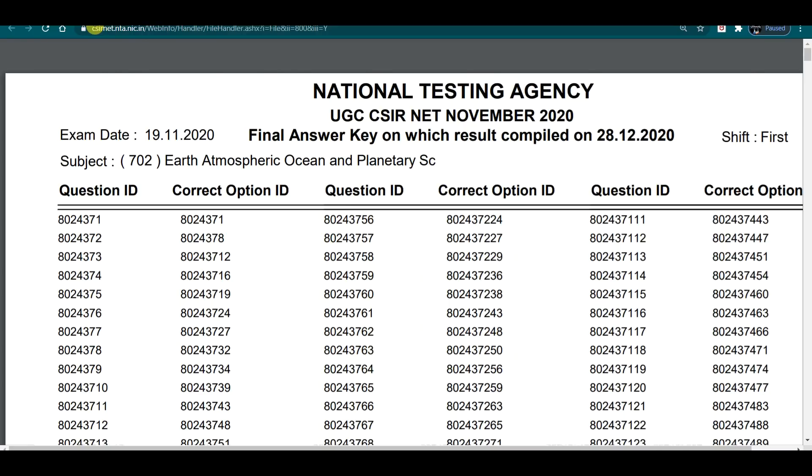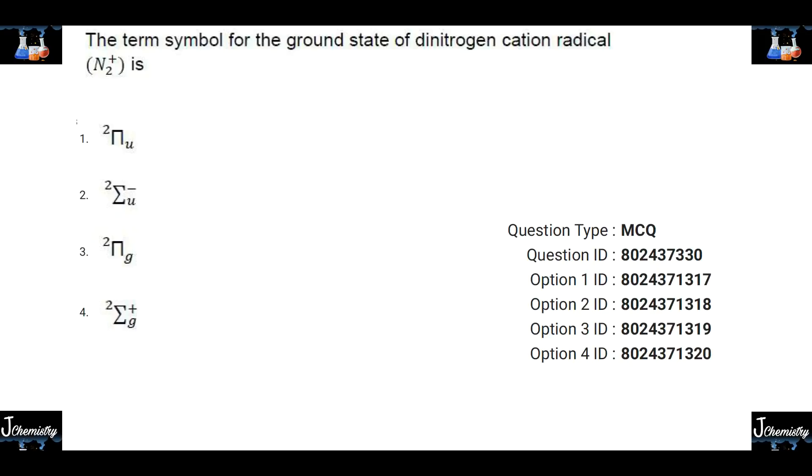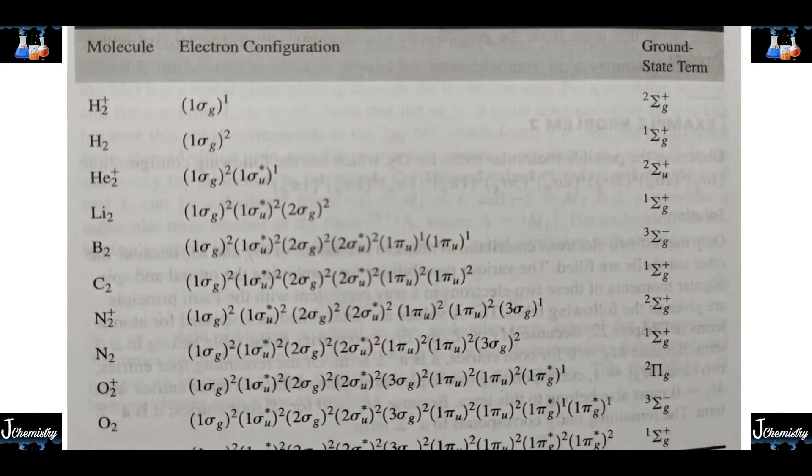I will show you which questions. So first of all, this question which I wanted to tell you the term symbol, Dyan Hydrogen Catan Radical. So first I think option A was given, but now the final answer came, option 4 has been given. So 4 marks will be added, congratulations.